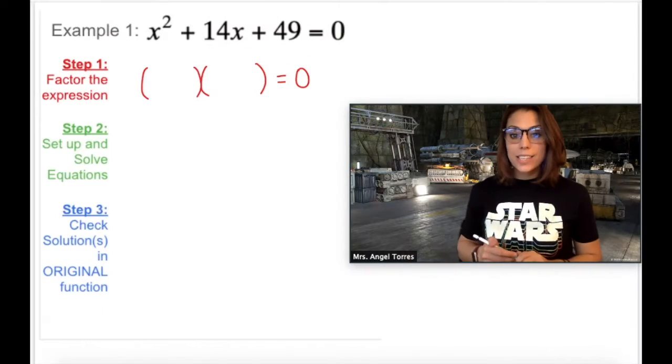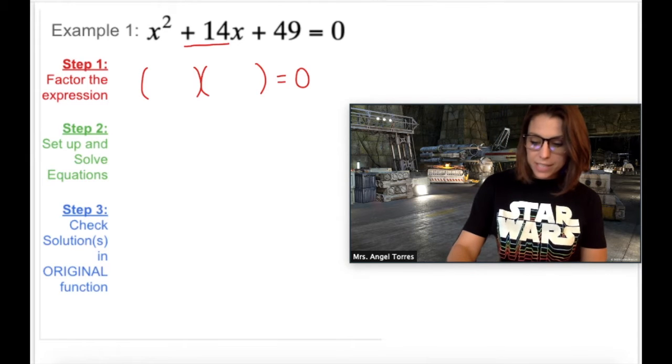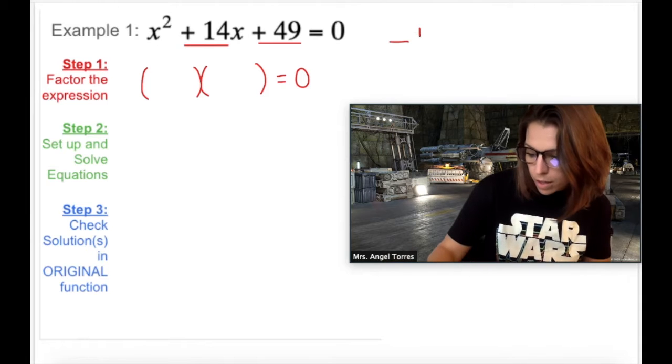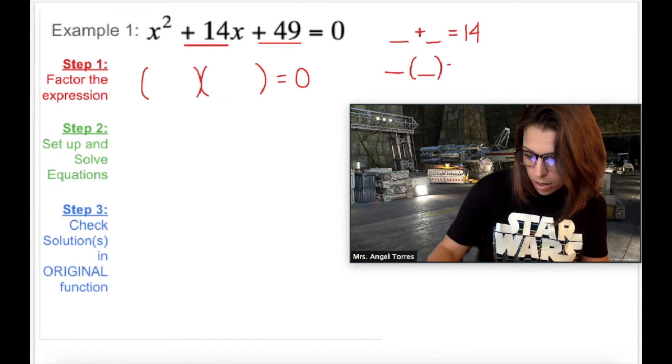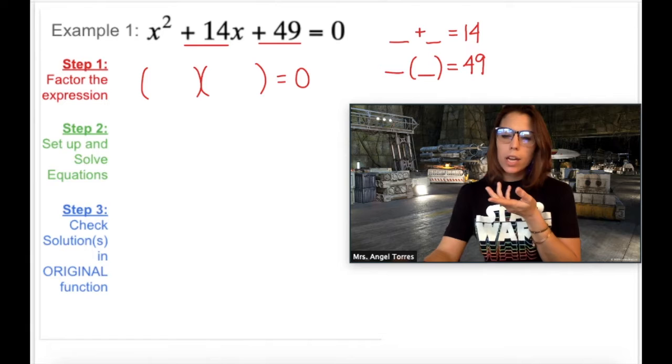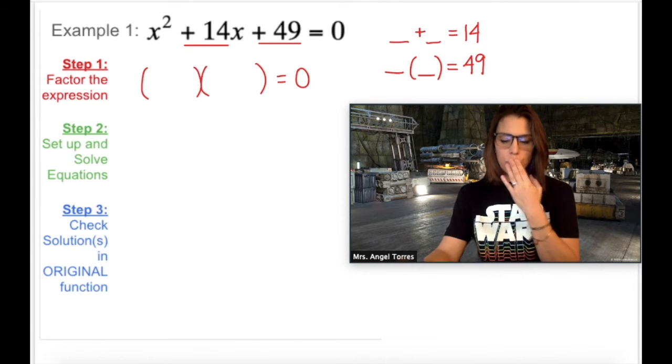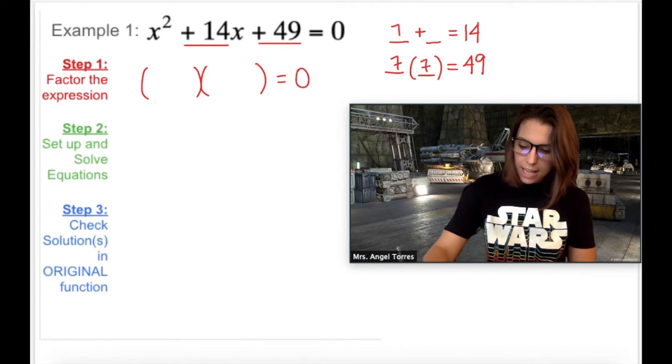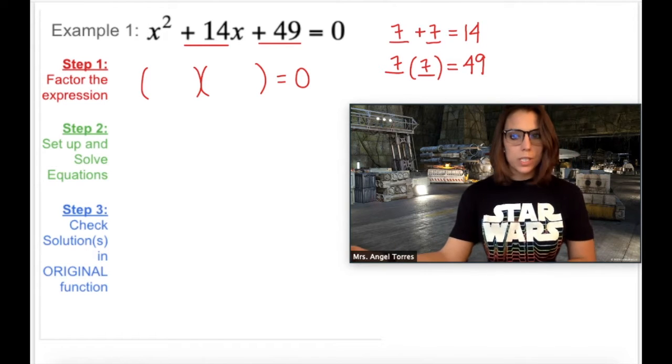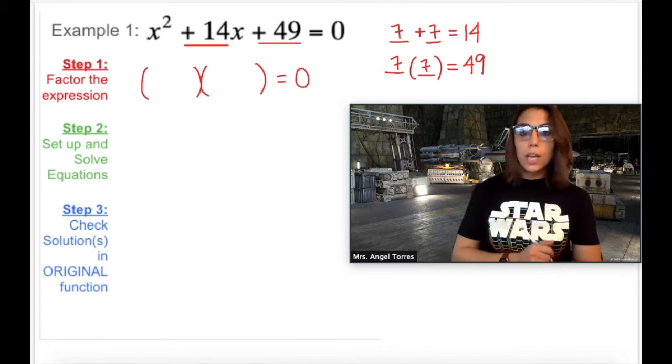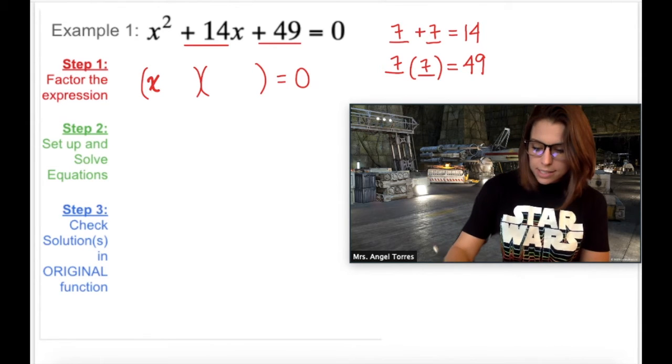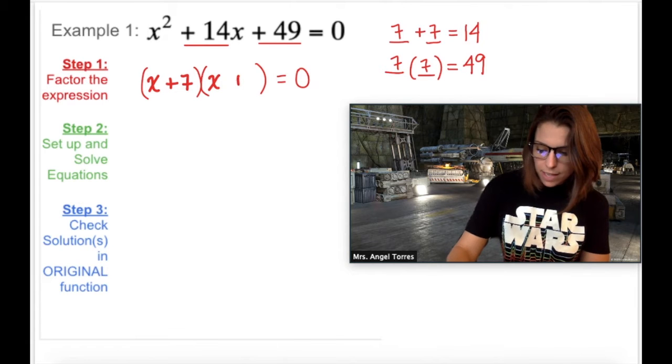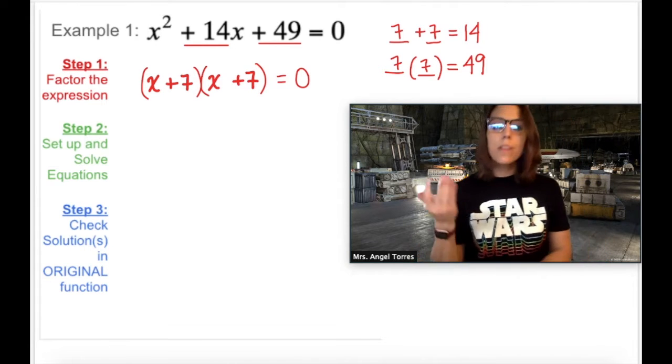So let's go ahead and do that. To factor using P's and Q's, we find two numbers that have a sum of the middle term and a product of the last term. What has a product of 49 and a sum of 14? What about 7 and 7? 7 times 7 is 49, and 7 plus 7 is 14. So those are my values of P and Q. So coming over to our product, X times X is how we get X squared, and a positive 7 times a positive 7 is how we get 49, and those also add up to 14.